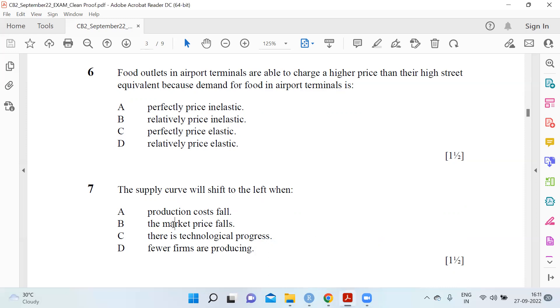The supply curve will shift to the left when fewer firms are producing. If production costs fall, supply will increase. Market price falls - there'll not be any shift. For technological progress, supply increases. Only fewer firms producing shifts left.